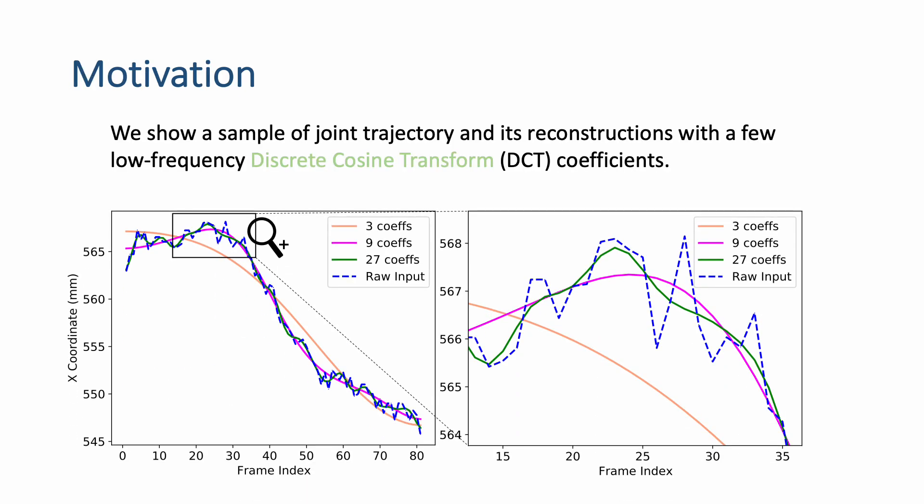We use this figure to show our motivation. This is an example of an 81-frame joint trajectory and its reconstructions with a few low-frequency discrete cosine transform coefficients. Please note that with only three DCT coefficients, the reconstructed orange curve can capture the rough contour of the raw input. And please also note that the reconstructed curves are smoother than the raw input.